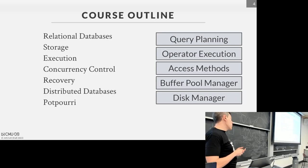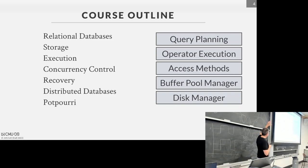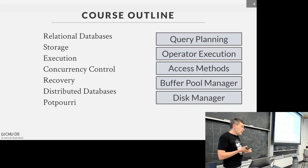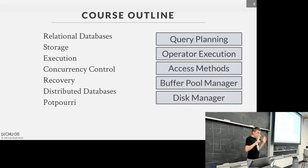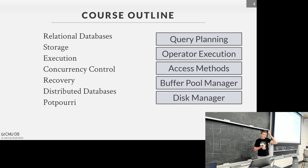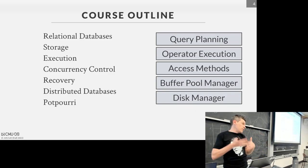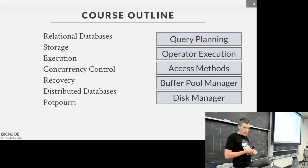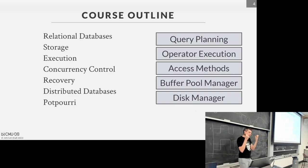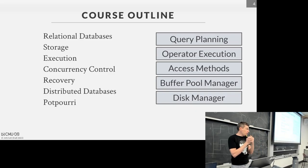The outline going forward: we've already discussed what relational databases are. The first four topics are storage, execution, and concurrency and recovery — the aspects you need to build a full-featured, safe, reliable database management system. We'll assume it's going to run on a single node, because it makes your life easier. Don't go distributed until you have to. Then once we understand what a single-node database system looks like, we'll expand to distributed databases, and at the end of the semester talk about additional features and optimizations as a segue into the advanced class.